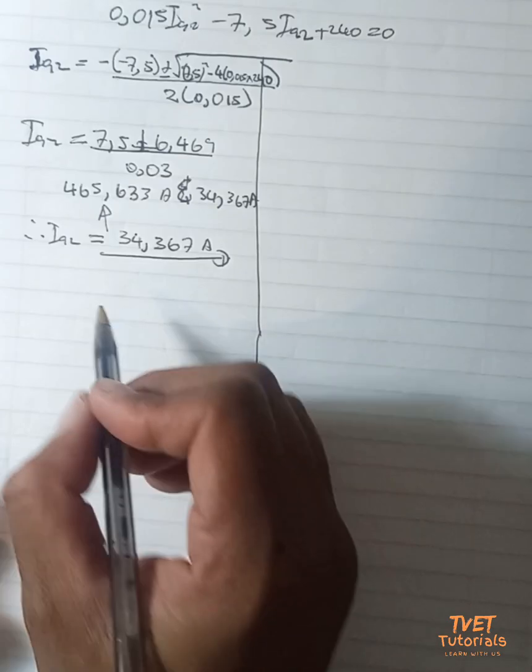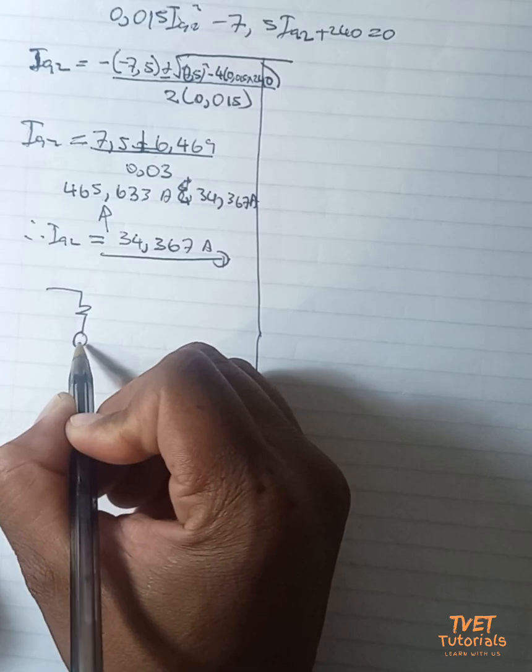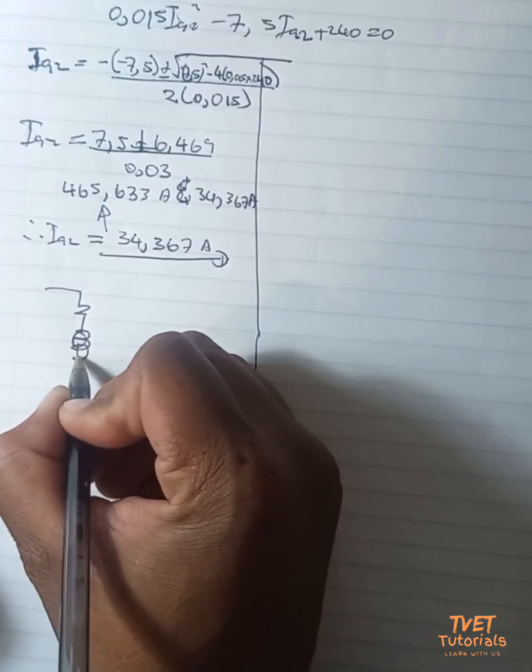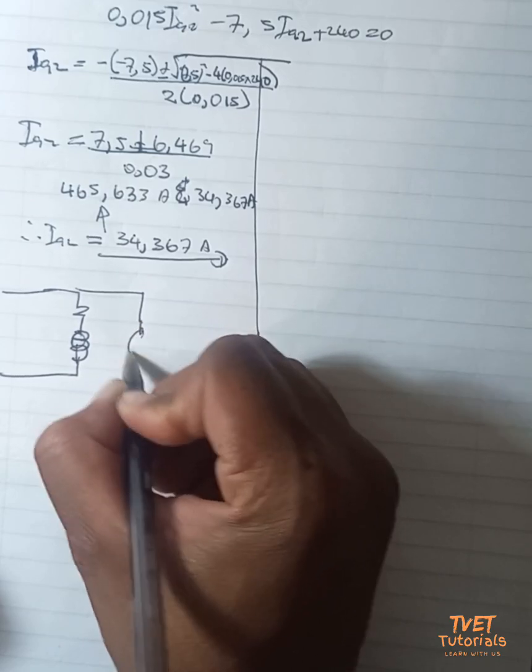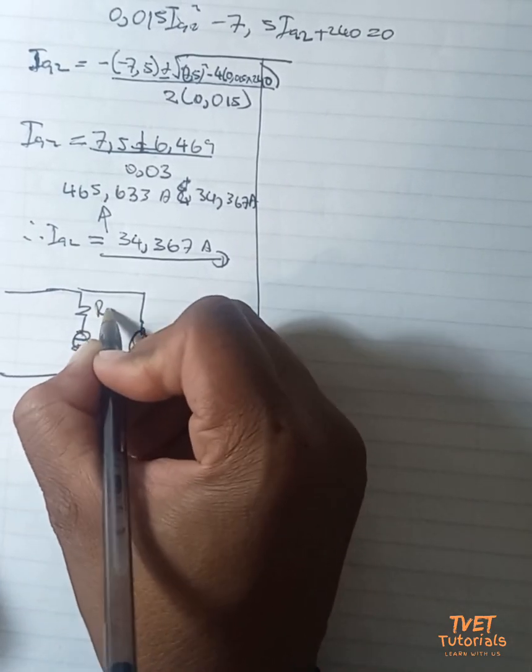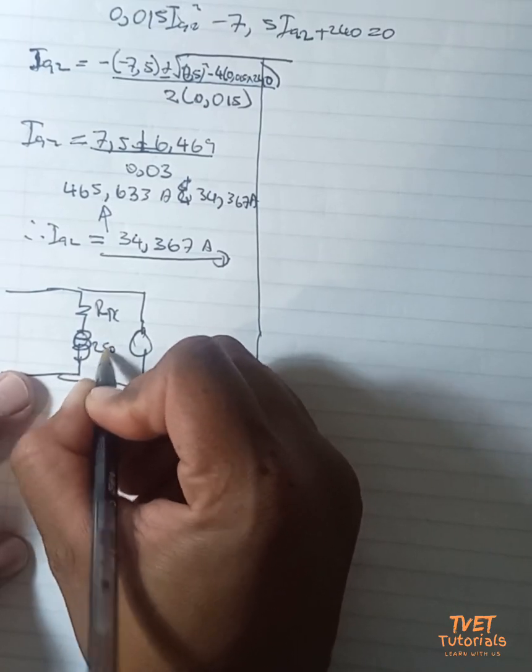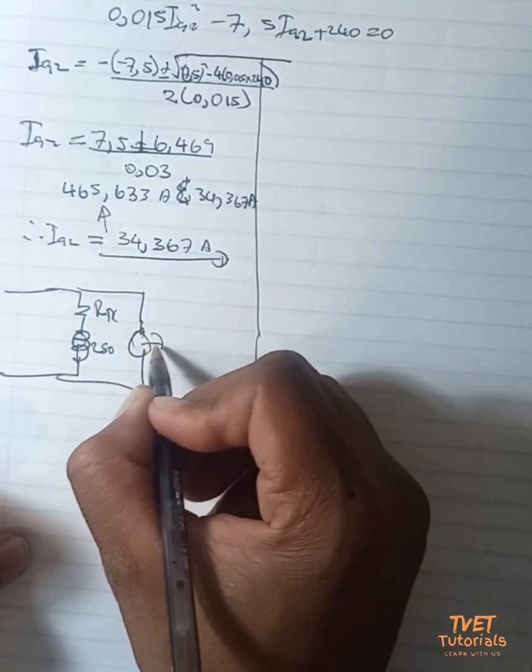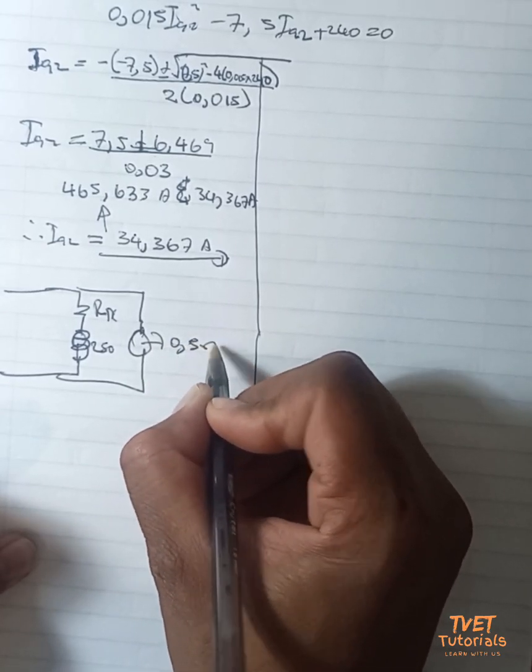Let me just quickly draw that second diagram again. Remember the second condition, we now have this value R_x being added there to the same 250 ohms that we have, and we still have the armature at 0.5 ohms.